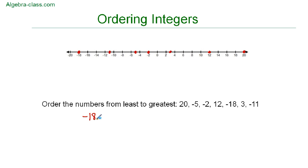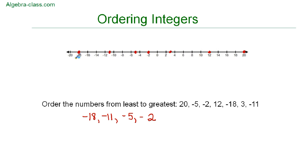and then negative 11, and then negative 5, and then negative 2. So those are all the negative numbers.